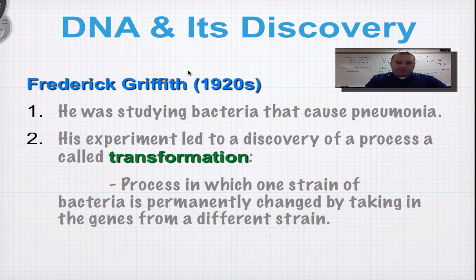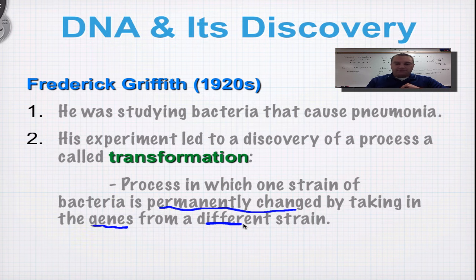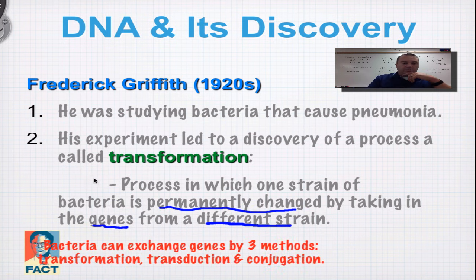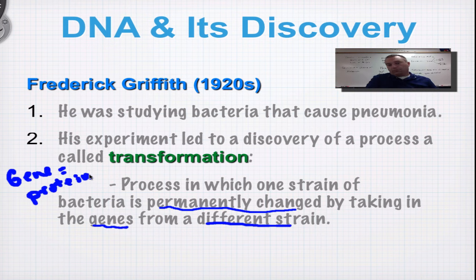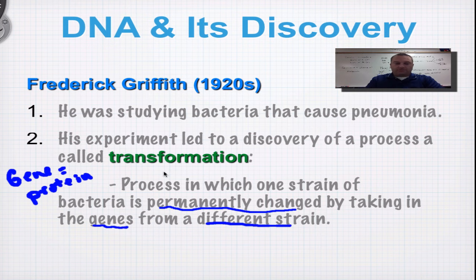While studying this bacteria, Griffith came across a process called transformation. In transformation, one strain — meaning one kind — of bacteria is permanently changed by taking in genes from a different strain. A gene is a segment of DNA that codes for a protein. One gene equals one protein — it has the directions for producing a particular protein.